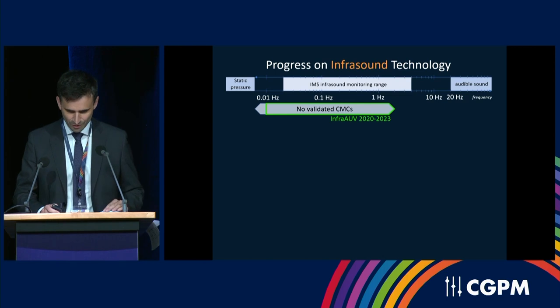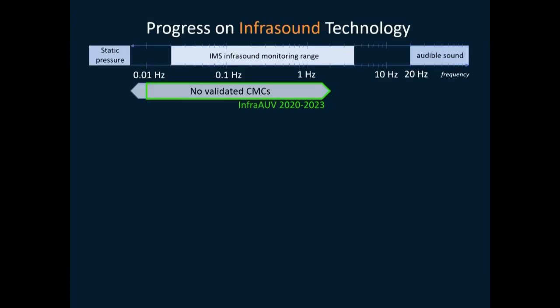I will go into more detail on progress per technology. We have three major technologies concerned: infrasound, seismic, and hydroacoustic. Starting with the infrasound, in 2018 a similar slide was shown to this assembly showing that there were no validated CMCs for a good part of the infrasound monitoring range, which ranges from 0.02 Hz to 4 Hz, while the InfraAUV project captures this need. This implies a particular focus on working with new instruments. In the past, in the acoustic domain we were thinking in terms of measuring static pressure using barometers, or audible sounds using microphones.